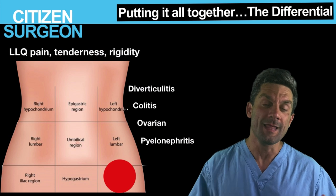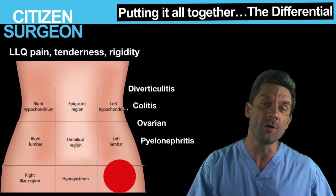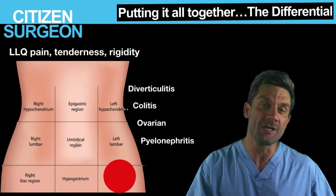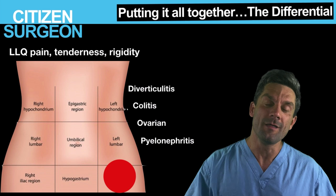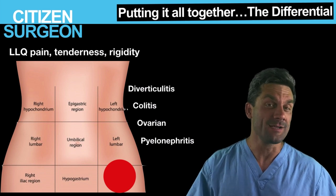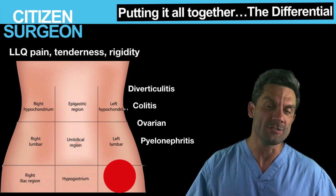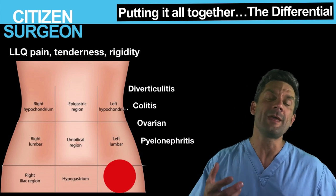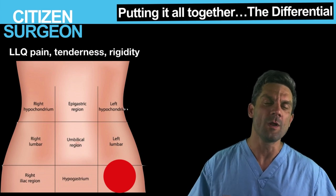Moving to the left lower quadrant — if you have left lower quadrant pain and rigidity, that could be diverticulitis, colitis, or again ovarian pathologies. Now that we've covered the exam, let's talk about labs.